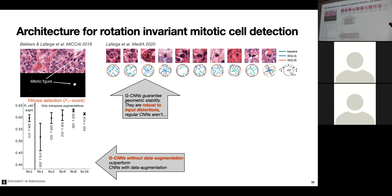There are some discretization artifacts visible — not perfect circles but close. These networks are actually trained with data augmentation, showing that group convolutions provide approximate invariance, with the residual discretization error visible in the slightly non-circular curves. This confirms that group convolutional networks are rotationally invariant by construction, and that this invariance is provably built into the architecture.